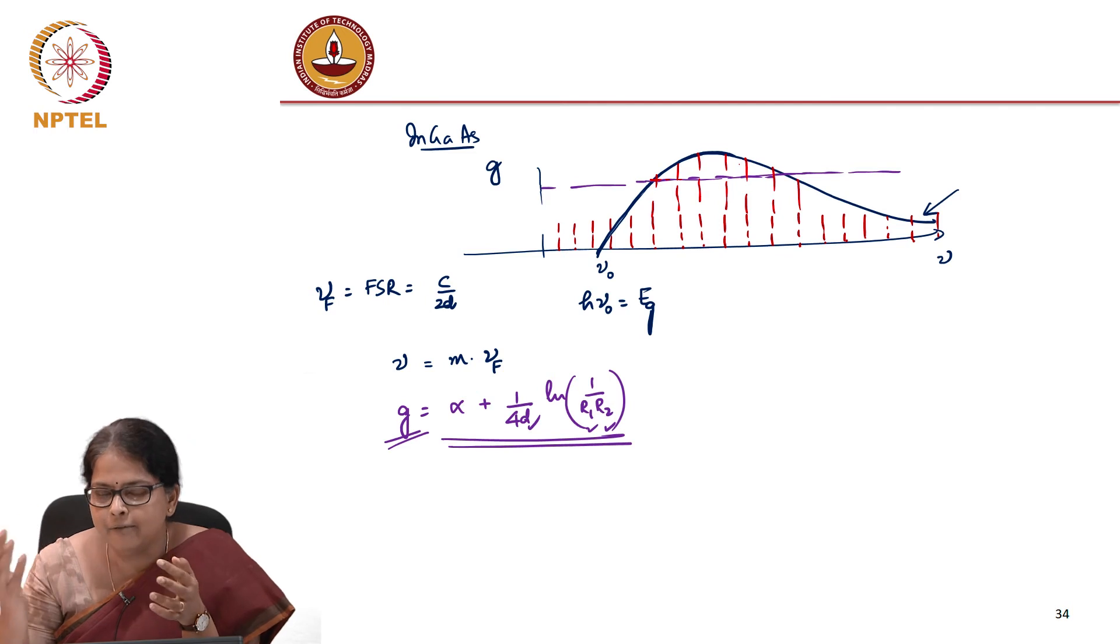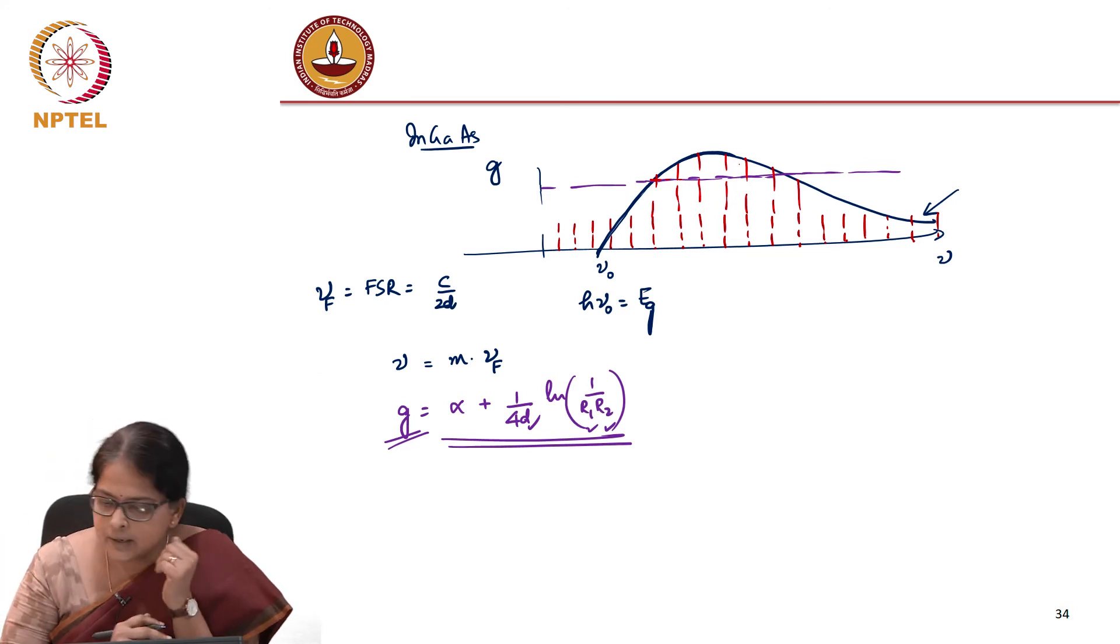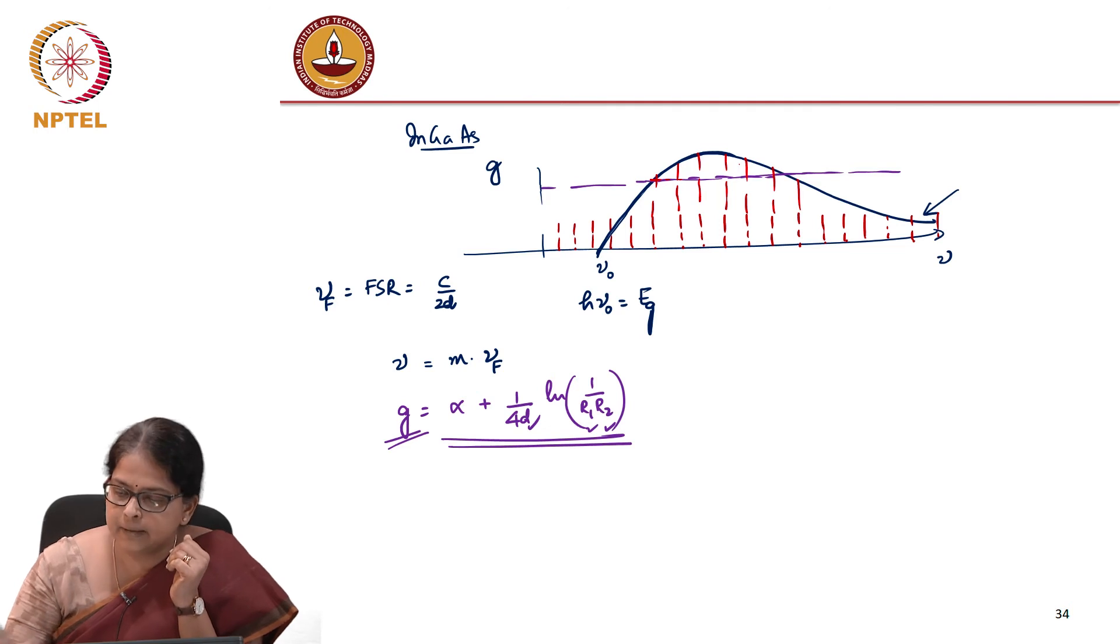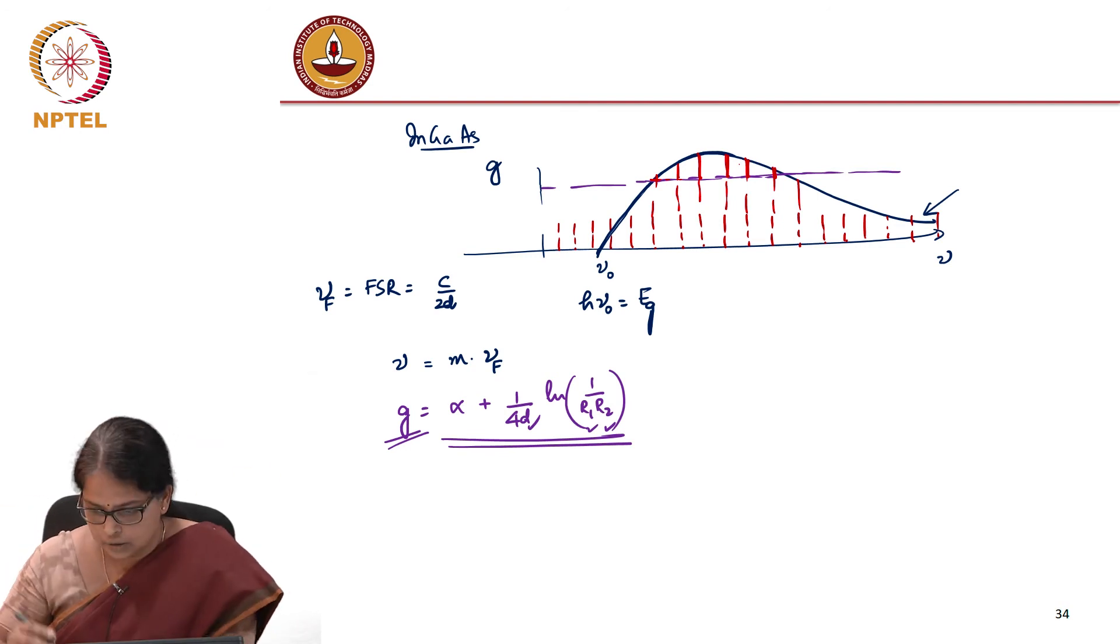Which means that by a careful manipulation of the FSR, I can now decide how many modes can be supported in my laser system. For instance, in this particular example that I have drawn, there are 1, 2, 3, 4, 5, 6 lines that are supported by the system. Because it is only those frequencies, 6 frequencies whose gain can be equal to the loss.